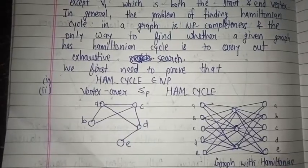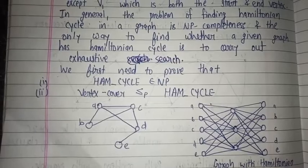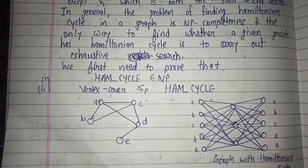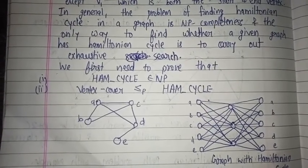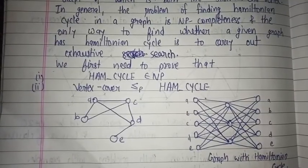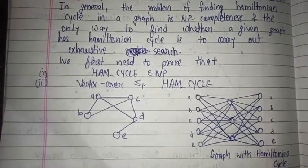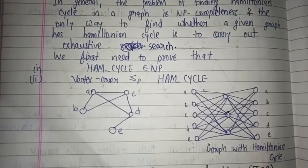This is why we can prove that Hamiltonian cycle belongs to NP and the vertex cover is less than equal to HAM-CYCLE. This is an algorithm. So you can see this graph on the left side. This graph is made with Hamiltonian cycle.